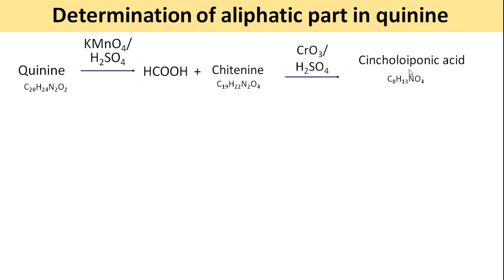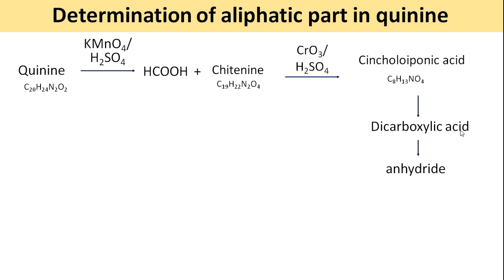Synchaloponic acid has molecular formula C8H13NO4. When isolated, it was found to be an aliphatic dicarboxylic acid which upon dehydration gave an acid anhydride — just as acetic acid gives acetic anhydride, or phthalic acid gives phthalic anhydride.